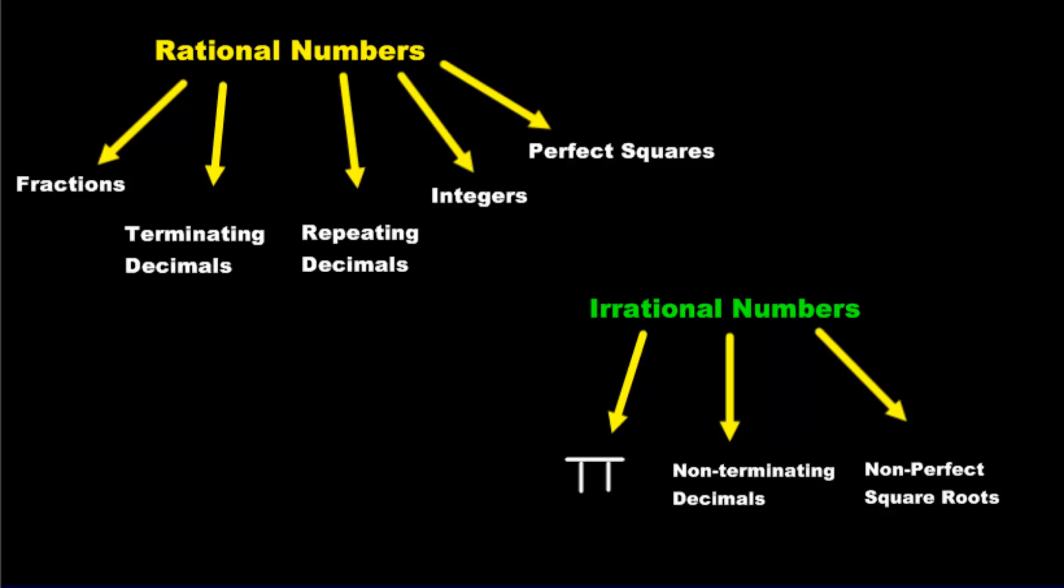Our number system can be broken into two categories: the rational expressions and the irrational expressions. We're going to look and dive into both of these terms.